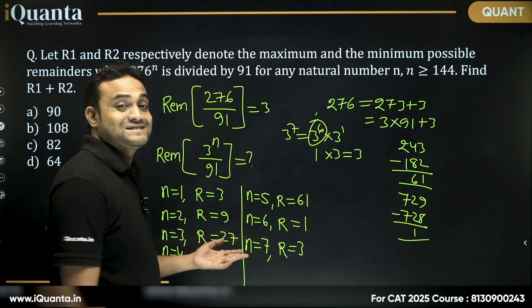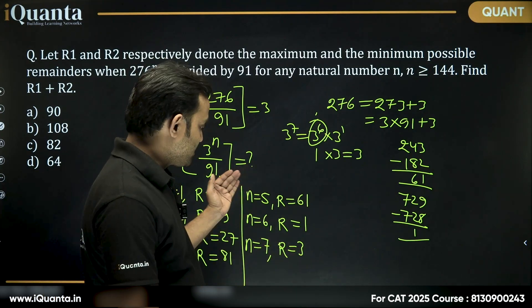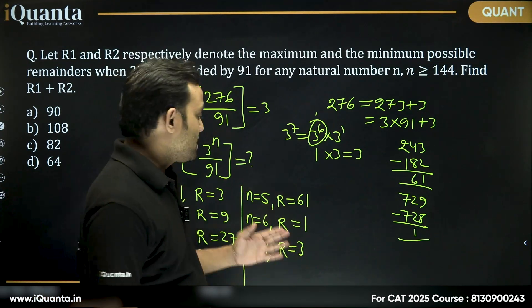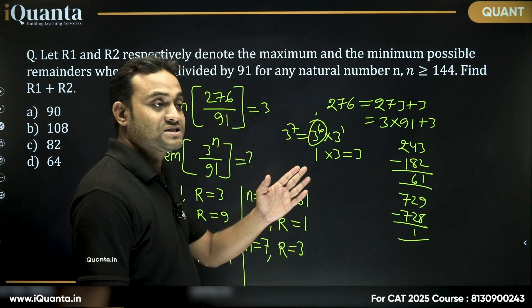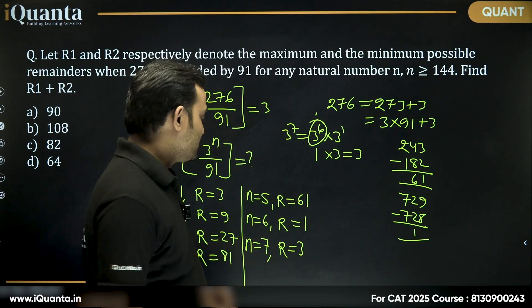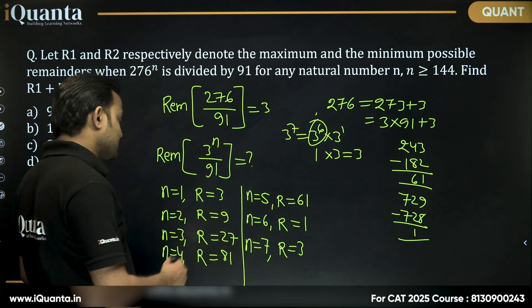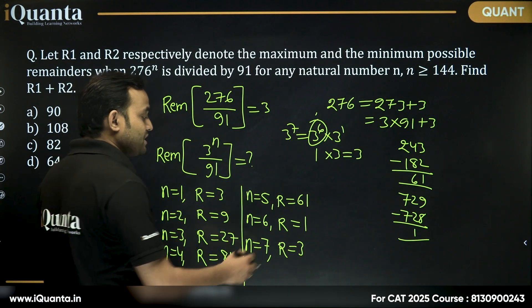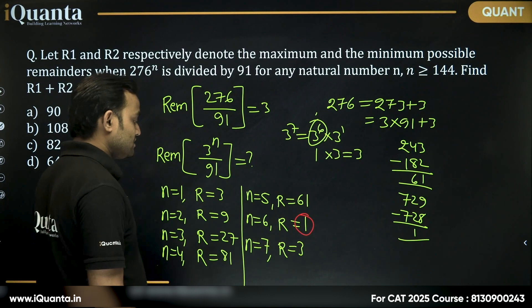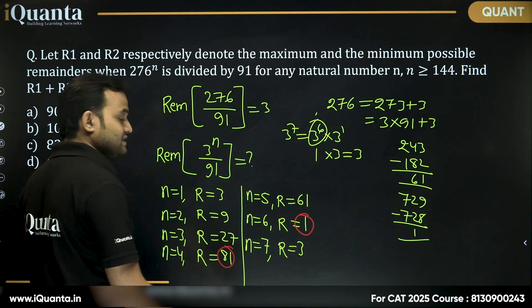So it will be a cyclicity of 6. The remainder will keep repeating after every 6th power. So can I say whatever the remainder we are getting here will be sufficient to answer the question. The minimum remainder you can see is 1. The maximum remainder you can see is 81.